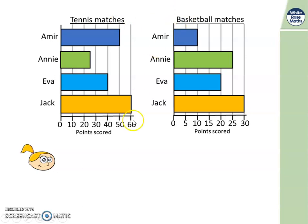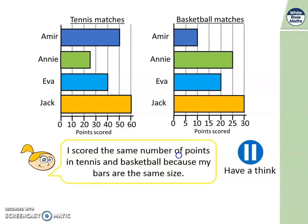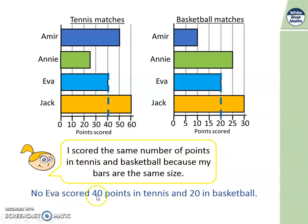Well done if you did. Eva says: I scored the same number of points in tennis and basketball because my bars are the same size. Let's see - this bar for Eva and this bar for Eva are the same size, but are they worth the same number of points? Eva scored 40 points in her tennis match, but even though the bar is the same size, because the scale is different, Eva scored 20 points in basketball. So no, she's not correct - Eva scored 40 points in tennis and 20 points in basketball.